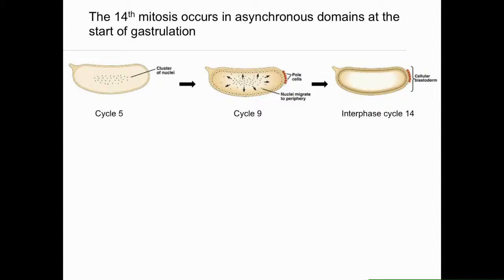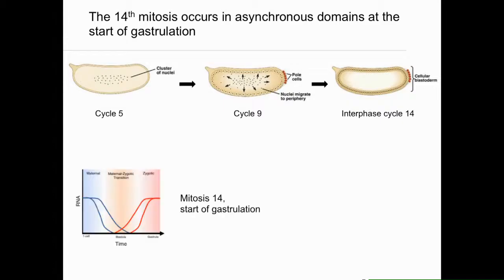This process is known as cellular blastoderm formation or cellularization, and it takes about an hour. After that, there's a big change between maternal transcripts and zygotic transcripts known as the mid-blastula transition, which is also at the start of gastrulation. The fly does something really odd in that it has an asynchronous mitosis-14.